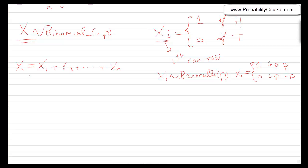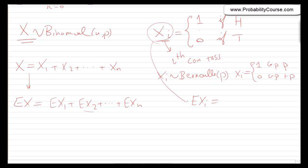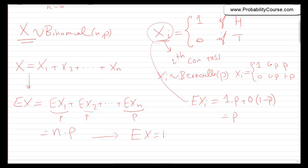We can immediately apply linearity of expectation: E[x] = E[x1] + E[x2] + ... + E[xn]. The expected value of each xi is 1·p + 0·(1−p) = p. There are n of them, so E[x] = n·p. So the expected value of a Binomial(n,p) random variable is np.